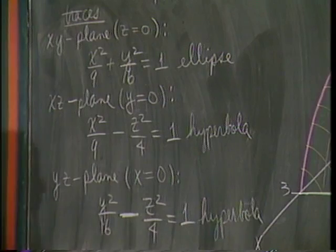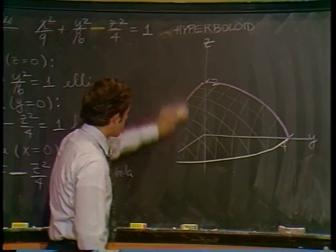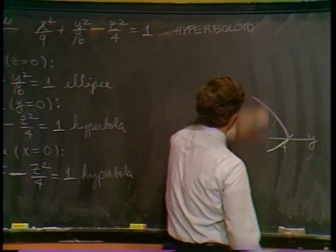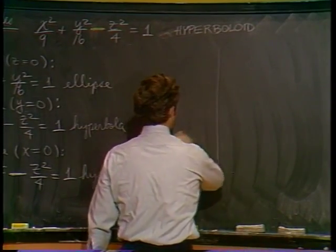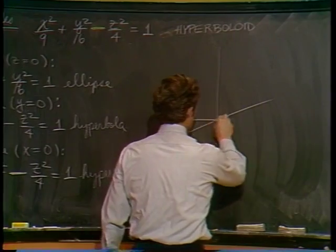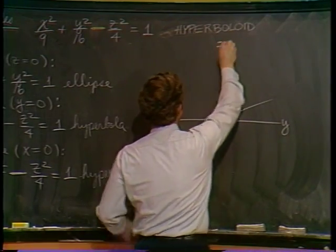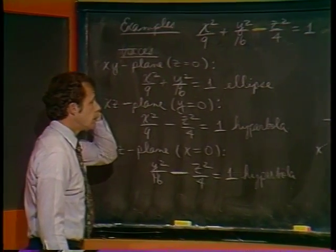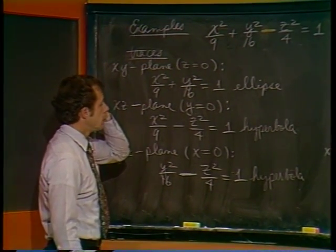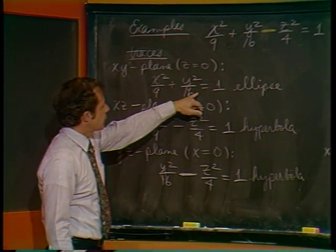When x equals 0, you'll have y squared over 16 minus z squared over 4 equals 1, and another hyperbola.